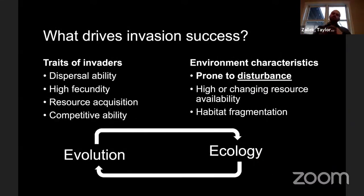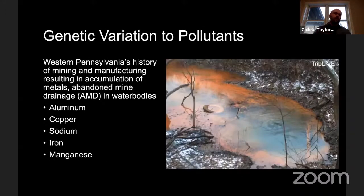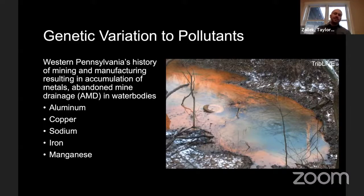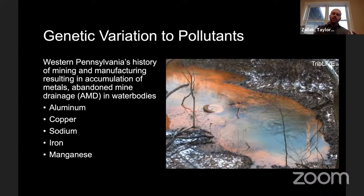There are many factors that could influence the evolution of invasiveness, but I'm going to focus today on disturbance. One reason disturbance was interesting is that here in Western Pennsylvania, we have a history of disturbed wetlands and water bodies — Pittsburgh's history of mining and manufacturing has led to water bodies that are really not so nice, and some of those water bodies do have duckweeds living there. Along with over 700 undergraduate students in an authentic laboratory learning experience this past spring before COVID shut us down, we measured genetic variation in 12 different genotypes of the duckweed species in response to a variety of stressors or metals, as measured by per capita exponential growth rate over a 14-day time period.